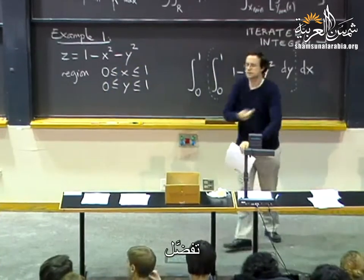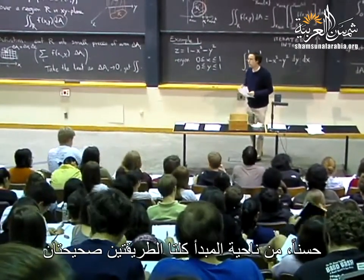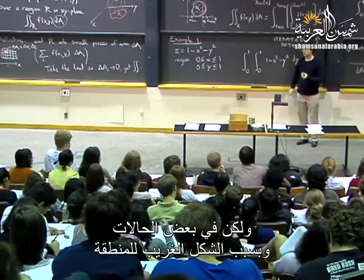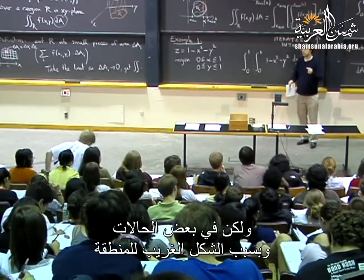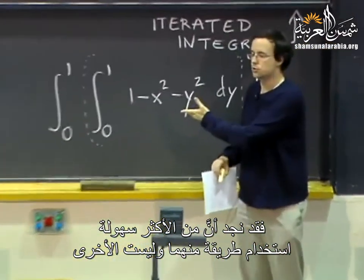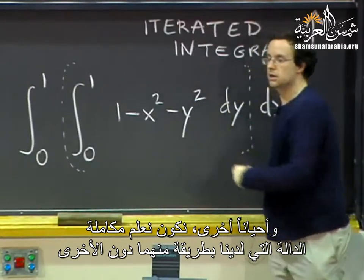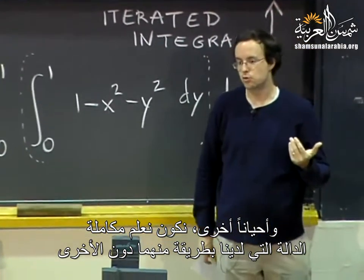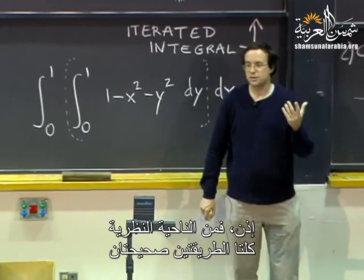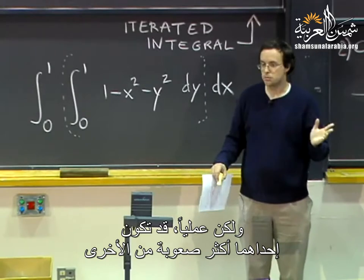Student question: will it always work both ways? In principle, yes, it always works both ways. Sometimes the region has a shape that makes it easier to set up one way than the other. Sometimes you know how to integrate the function in one order but not the other. The theory says it should work both ways; in practice, one calculation may be much harder.